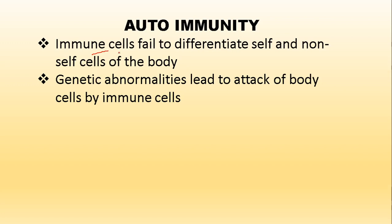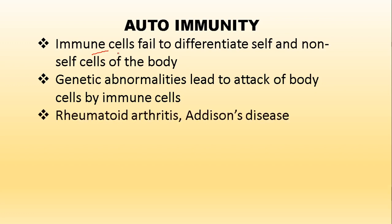When immune cells fail to recognize the correct targets, they attach to normal functioning body cells, thereby leading to malfunctioning of the system. Examples include rheumatoid arthritis and Addison's disease — these are two types of autoimmune disorders. Autoimmune disorders usually recover on their own, so only supportive treatment is given in such cases.